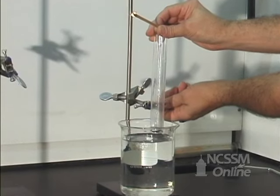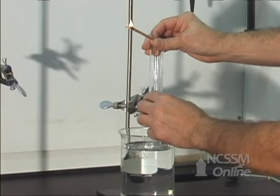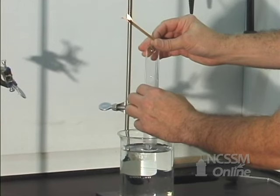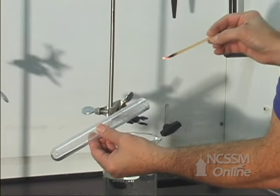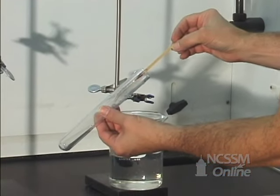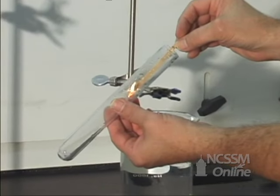We can demonstrate that the gas collected is oxygen by testing the gas with a glowing splint. As a glowing splint is brought into the test tube, the combustion accelerates in the oxygen and the splint reignites.